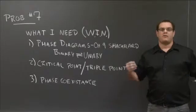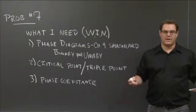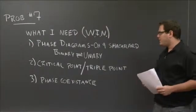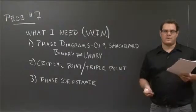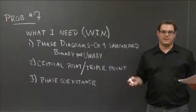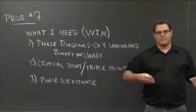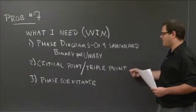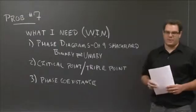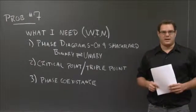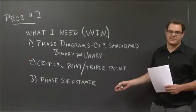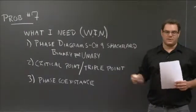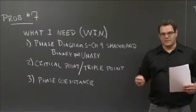So for this particular problem, which I think of as the phase diagram problem, you need three things critically. Number one, you need to have a general understanding of what a phase diagram is, how to read it, how to write it, how to interpret the information that it gives you. You can find a lot of this in chapter nine of Shackleford. Along the same lines, you should probably know how to go between binary and unary phase diagrams. The second thing you should know is some language, like critical point and triple point, where these are and what they mean on the phase diagram. And the third thing is phase coexistence. What does that actually mean? How do you find it on a phase diagram? So with these three particular points, review them, and then I would recommend attempting the problem afterwards.